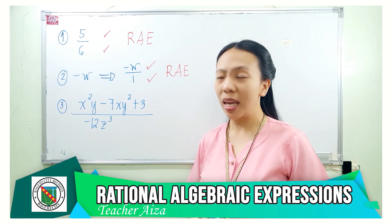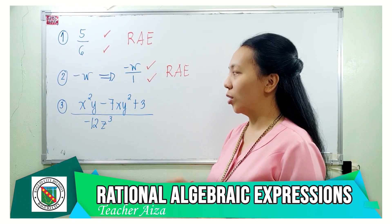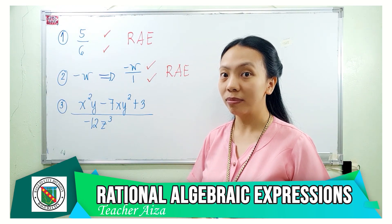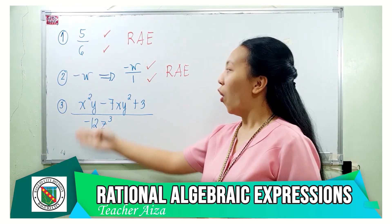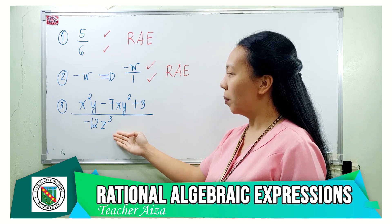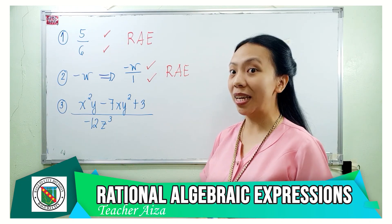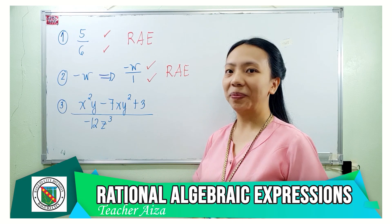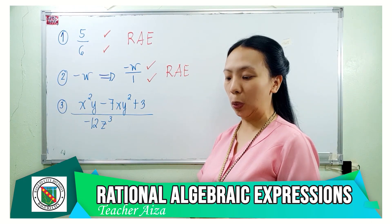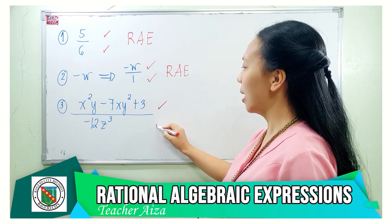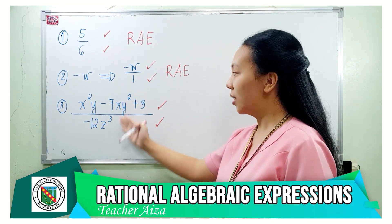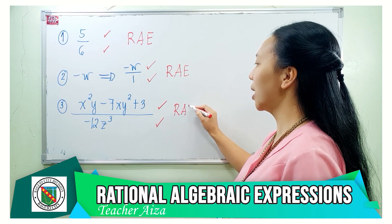Example number 3. Is the numerator x squared y minus 7xy squared plus 3 a polynomial? Yes — all of the exponents of the variables are whole numbers. What about the denominator negative 12z cubed? Is it a polynomial? Yes — the exponent of the variable z is a whole number. Since both the numerator and the denominator are polynomials, therefore this expression is a rational algebraic expression.